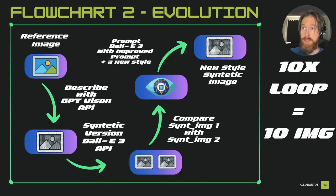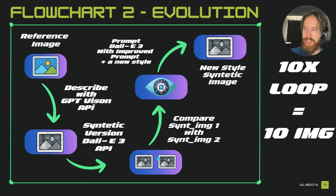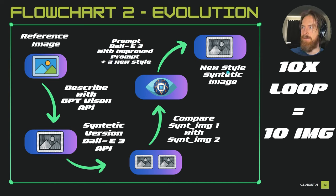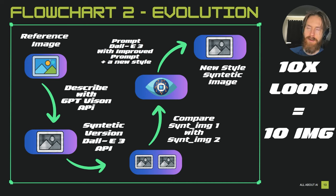I also created an evolution version of this. It's basically the same, except on the second loop instead of comparing the synthetic image to the reference image, we compare the two synthetic images and generate a new prompt. For each prompt we also add a new style to the image, so we get an evolution of each image. These feed back in, evolving from the reference image to a whole new style, while still referencing back to the original. We can run this in a 10-iteration loop to get 10 images.